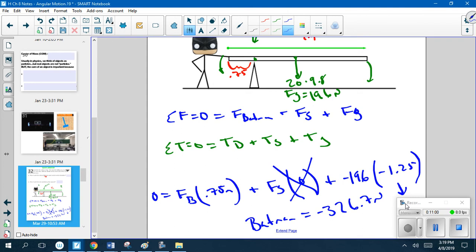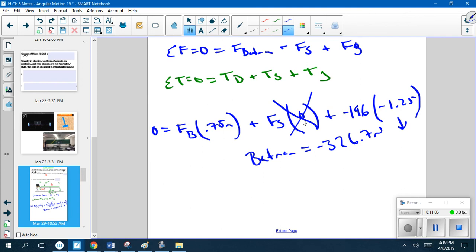All right, so that's part A. Part B is asking about the force of the support. So even though it's not rotating, it still has a force. So it has to be able to handle the force of Batman plus the force of gravity. So that means that zero should equal this negative 326.7 newtons, which means that the force of the support should be a positive 522.7 newtons.